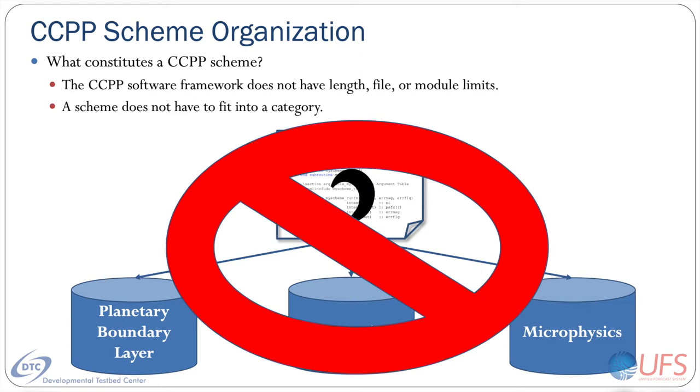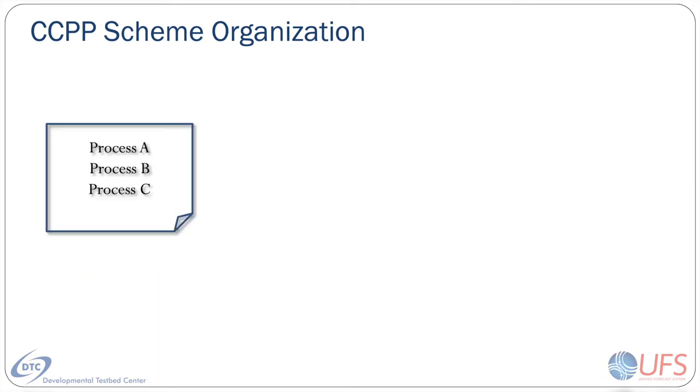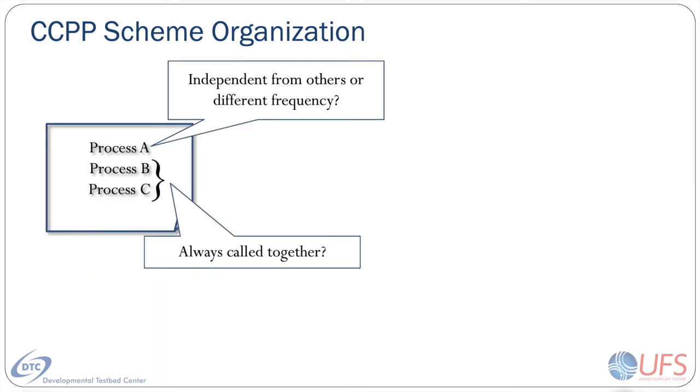It is best practice, however, to define a scheme as all the code required to represent some well-defined physical process' impact on the model state. In addition, if you think that it's reasonable that a user might want to only run part of the code independently, or perhaps at a different frequency, consider making that part into a separate CCPP scheme.